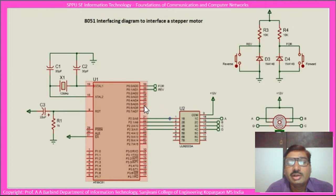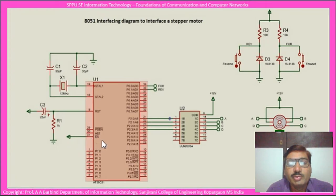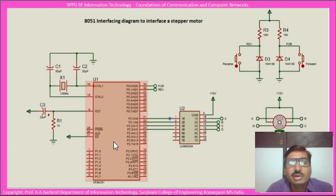Basically, the 8051's two ports are used for interfacing the stepper motor: port 2 with 4 lines, and port 0 with 2 lines for controlling the direction of the motor. The rest of the pins are unconnected, while a few important pins are connected appropriately. EA bar is connected to ground so that there is no external memory. Reset circuitry is connected to RST and a crystal generator is connected between the crystal lines of 8051.